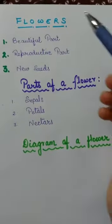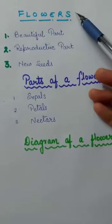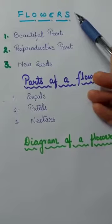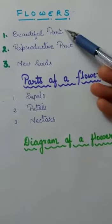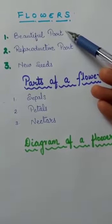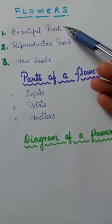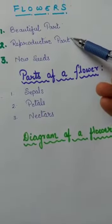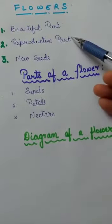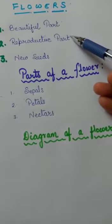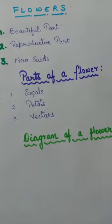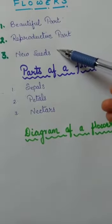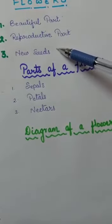Good morning. Today we will see what are flowers. Flowers are the beautiful part of a plant. It is also called the reproductive part of a green plant. Flowers are responsible for producing new seeds of the same plant.